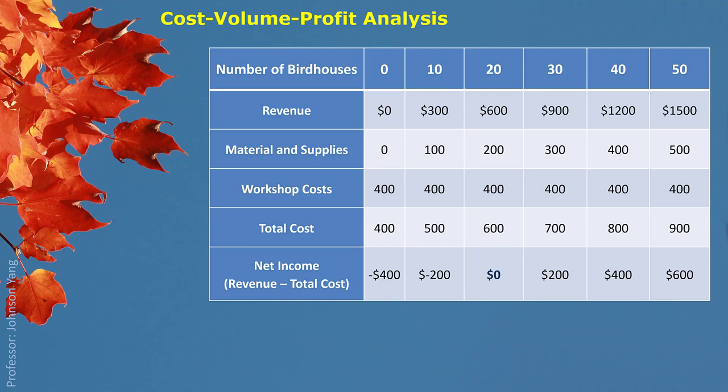In the chart, we can also see the revenue is related to the number of production as well. We can figure out 300 divided by 10 gives you 30, and 600 divided by 20 gives you 30 as well. Eric plans to sell the birdhouse at a price of $30. So if we use X to represent the quantity of birdhouses, then we have total revenue = 30X, which is $30 multiplied by quantity.